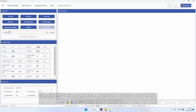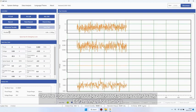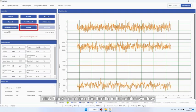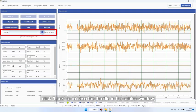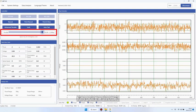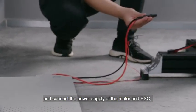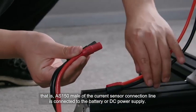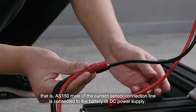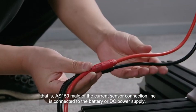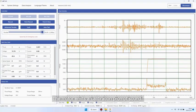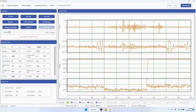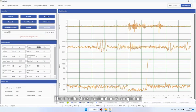For the ESC that cannot be calibrated, please refer to the ESC manual for settings. When the power is off, click lock to release the throttle in the control window, fully pull the throttle, and connect the power supply of the motor and ESC. That is, the AS150 male of the current sensor connection line is connected to the battery or DC power supply. The motor emits a calibration prompt sound. Upon hearing the prompt sound, click to lock the throttle. The throttle stroke calibration is completed.